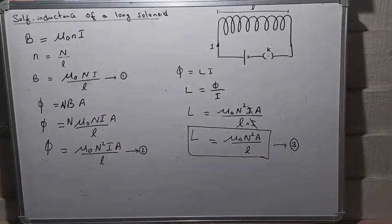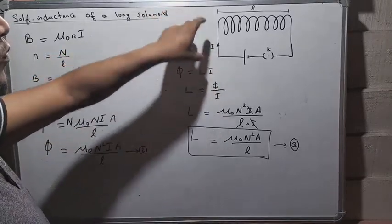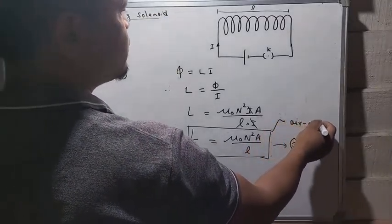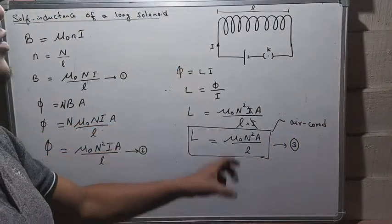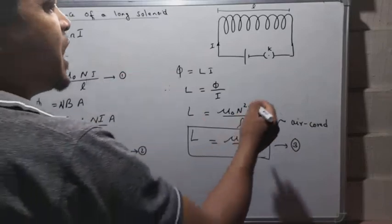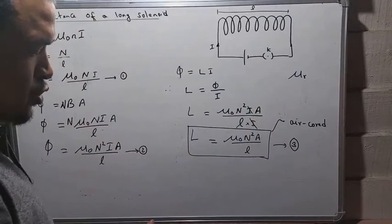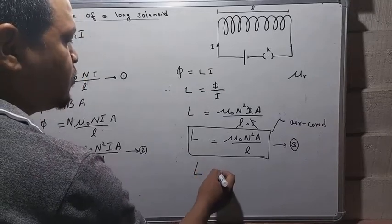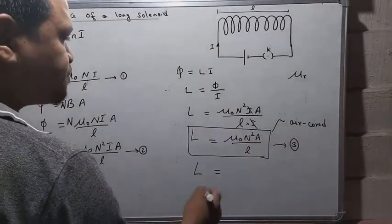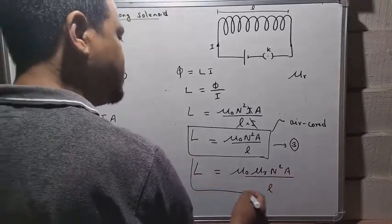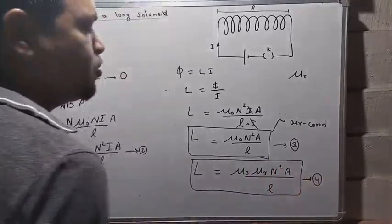This equation is true only for an air core solenoid. Now, suppose we insert an iron core having a relative permeability μᵣ inside the solenoid. Then the self-inductance will be different, and the formula becomes L equals μ₀μᵣN²A/l. This is equation four, which gives the self-inductance of an iron core solenoid.